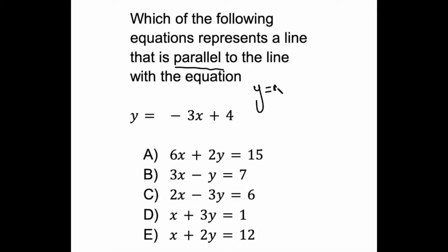Well, in the form y equals mx plus b, which we have here, m is the slope. So in this case, in this line, the slope is negative 3.